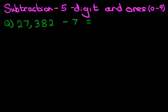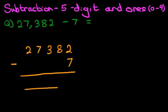Now the first stage is we're going to rewrite this question from the horizontal format into the vertical format. So let's do that over here. 27,382 minus 7. Nice neat columns. Make sure you get the format correct.